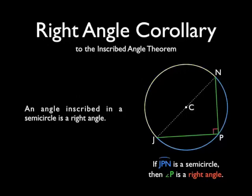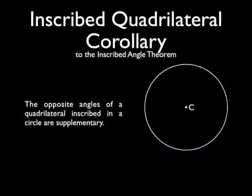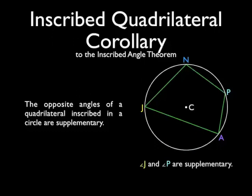And finally, the inscribed quadrilateral corollary. This one says that the opposite angles of a quadrilateral inscribed in a circle, here we have quadrilateral JAPN inscribed in circle C, and that means that angles J and P are supplementary, and angles A and N are supplementary.